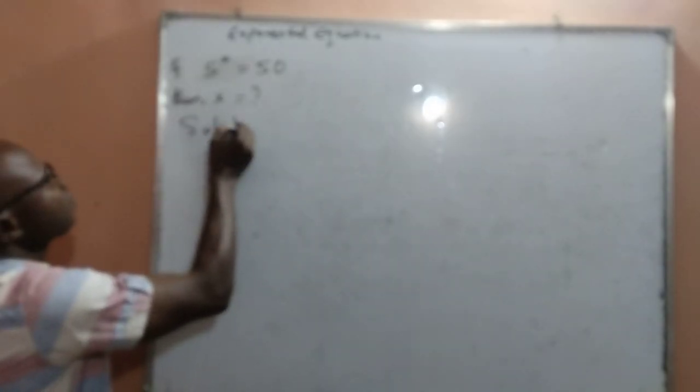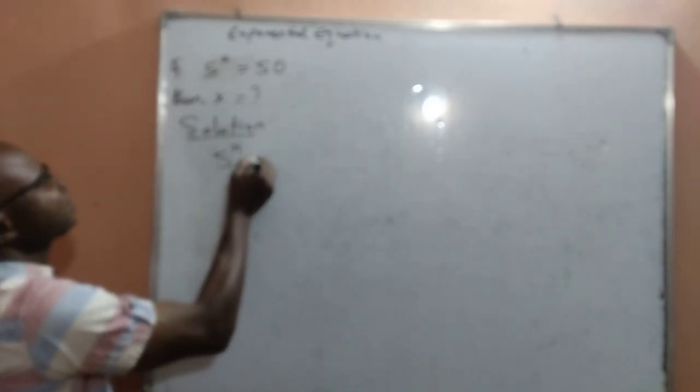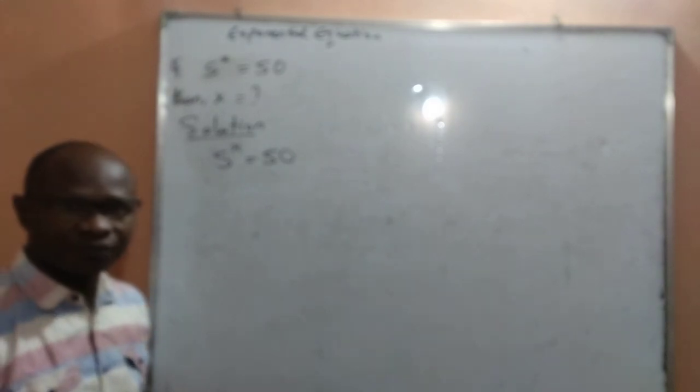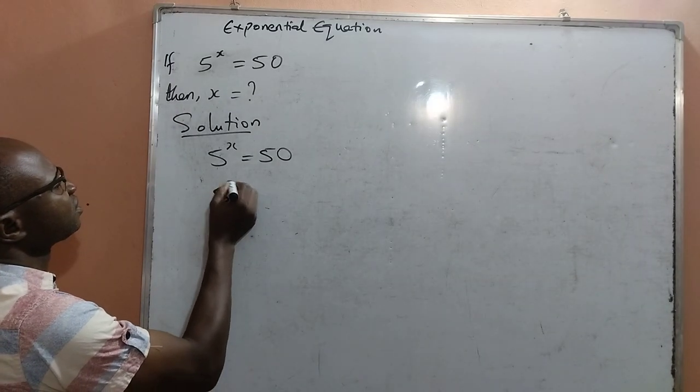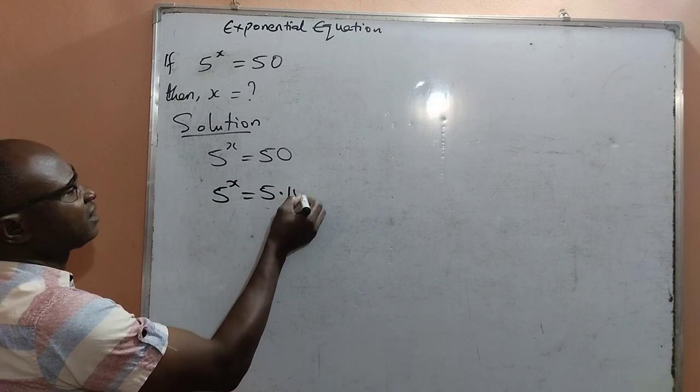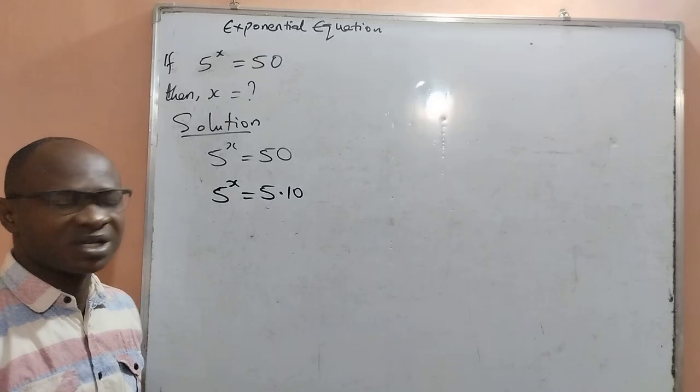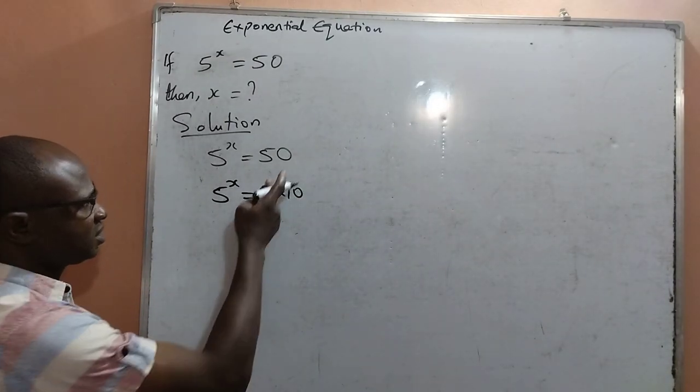Solution to the given question: 5 raised to the power x equal to 50. Let me quickly write 50 as 5 multiplied by 10, because 5 times 10 is 50.